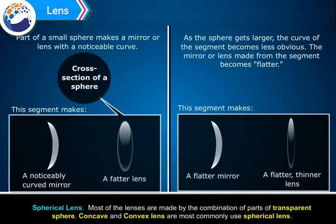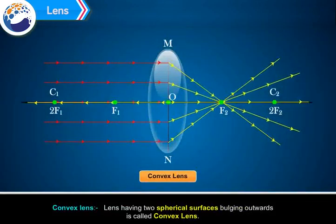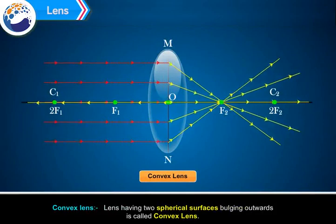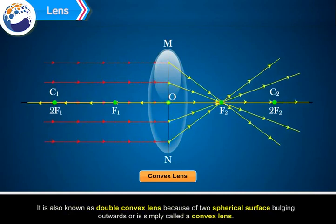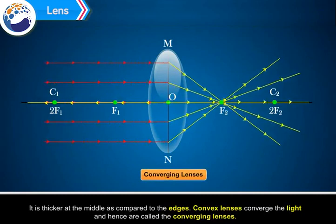Most of the lenses are made by the combination of parts of a transparent sphere. Concave and convex lenses are the most commonly used spherical lenses. A lens having two spherical surfaces bulging outwards is called a convex lens. It is also known as a double convex lens, or is simply called a convex lens.